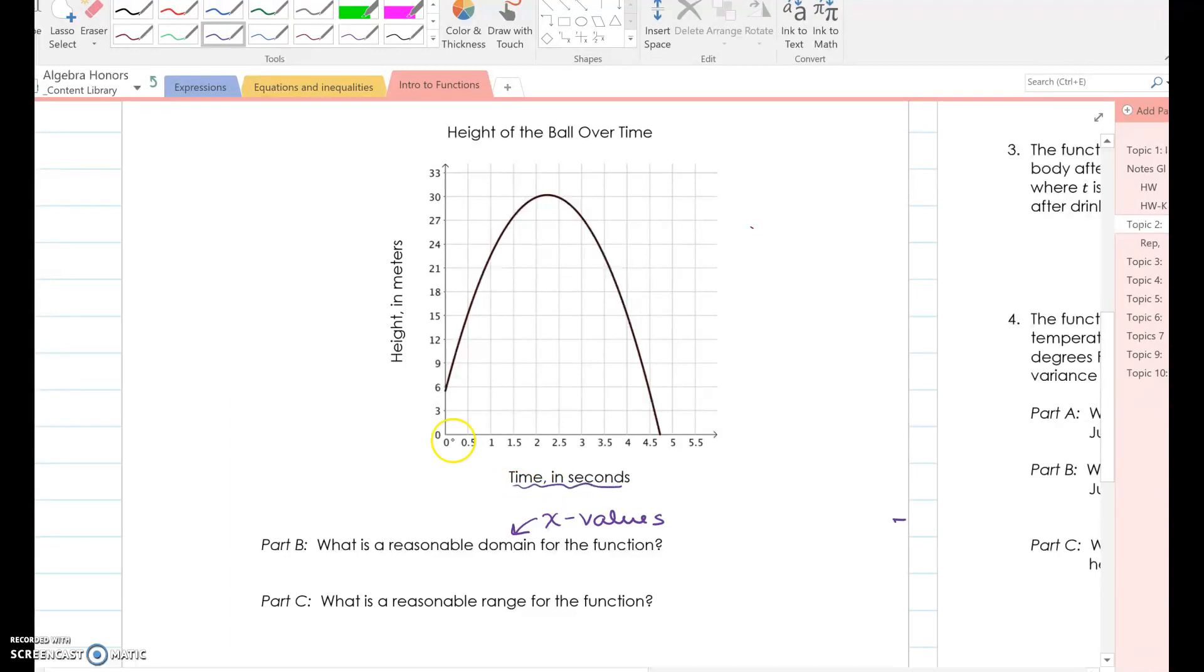So what is the smallest X value? Now remember, X value, that's talking about time. So what's the smallest time that I could have to throw a ball? Well, can I have negative time? No, definitely not. So my smallest time is zero. And I'm going to follow my graph over. And my largest time, I want to say that's about, I don't know, 4.6, 4.7, something like that. So my time, or my X, X is between zero and 4.7.